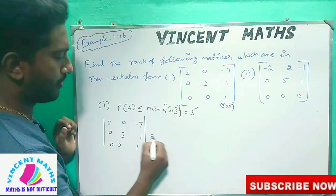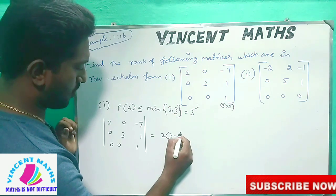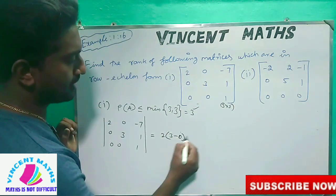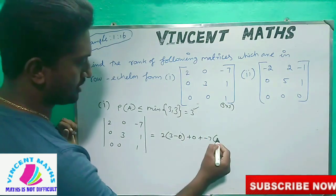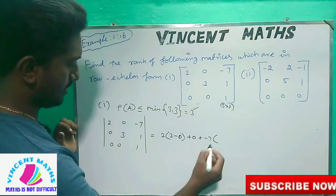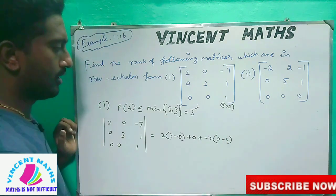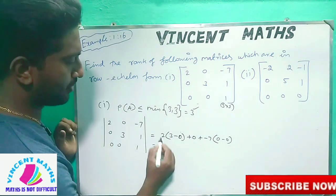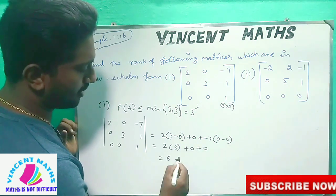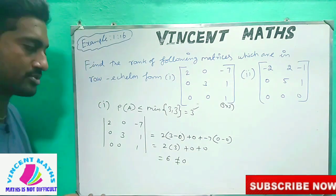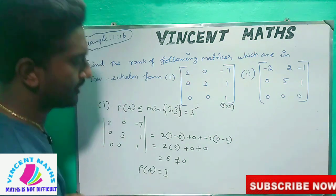Okay friends, if we expand this, we have 2 and expand. How do we write this? 3 minus 0, and minus 7 into 0 minus 0. So 2 into 3 gives us 6, and the rest are 0. Then rank equals 3. That's the solution — rank is 3.